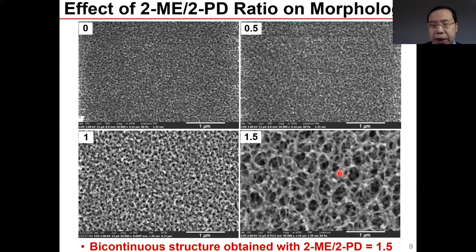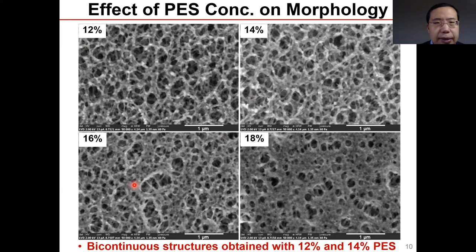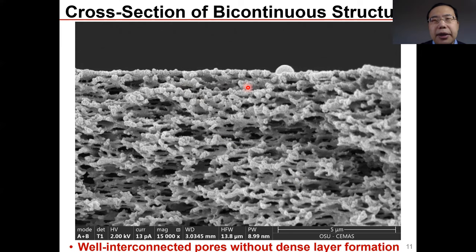Here we show the effects of PES concentration on substrate surface morphology. At 12%, the structure is well-opened with a bicontinuous morphology. At 14%, also good. At 16%, not as good, and at 18%, even worse — the structure becomes tighter. The cross-section of the bicontinuous structure shows a well-open, well-interconnected and quite homogeneous morphology, with no dense skin layer formation.